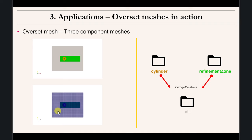Now we move to a slightly more complicated case. We're working with the cylinder case — this is our quintessential application. We add a small refinement region here, so now when we assemble our overset meshes, we have the cylinder mesh, then the refinement zone generated independently, and we merge everything into a single mesh. We call it 'all', which will be the background — the largest mesh that encompasses everything.